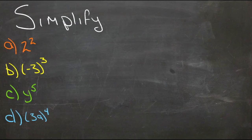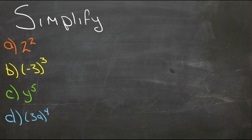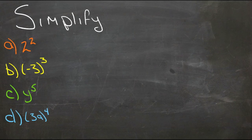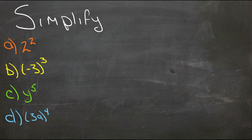Now we're going to take the four answers from the previous questions and simplify them further. When all you have is a variable, like C here, we can simply write y times itself five times as y to the fifth — that's completely simplified, as concise and efficient as we can write that information.